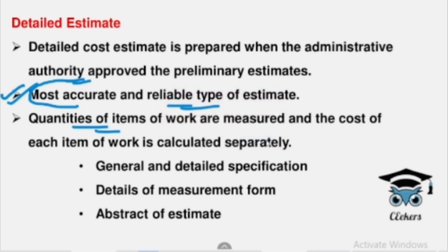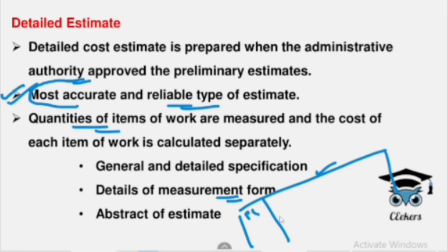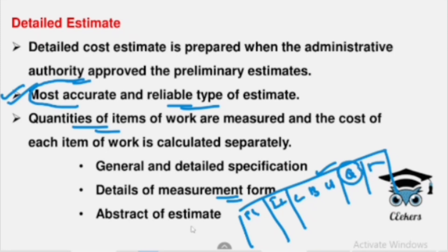The details are recorded in a Measurement Form. First, we prepare the form with: serial number, item description, length, width, height, quantity, and remarks. We prepare the Measurement Form, then the Abstract of the Measurement Form. We need to prepare the estimate from the abstract — the determination of the exact estimate.